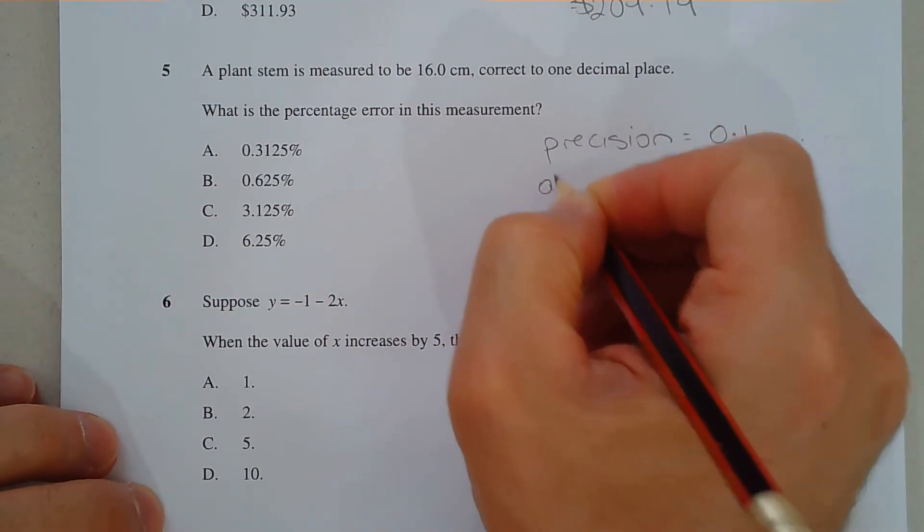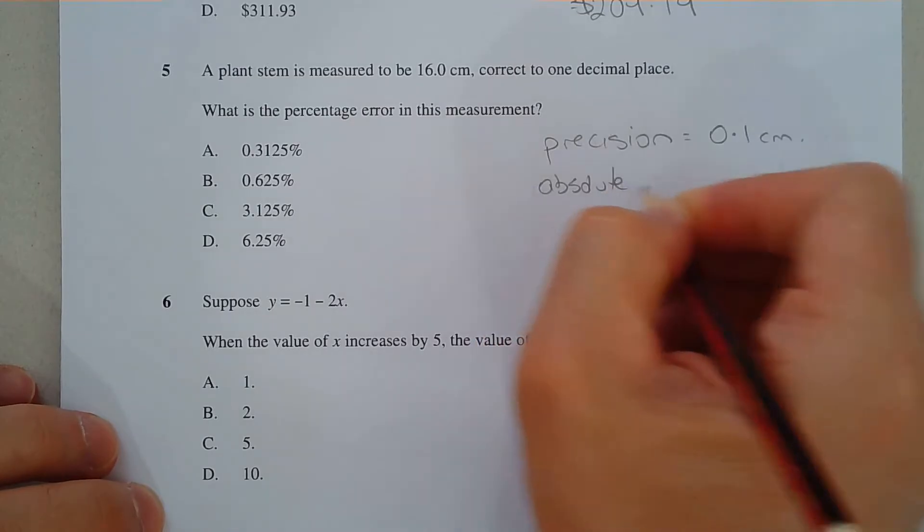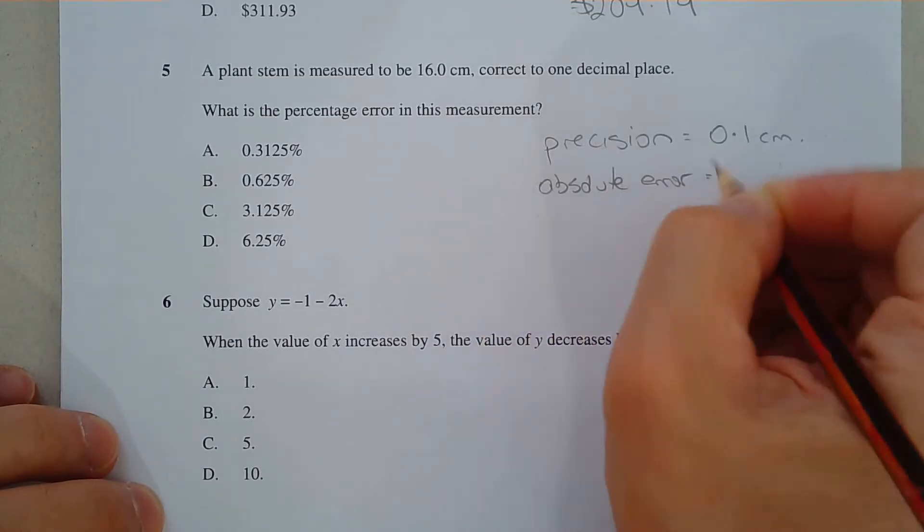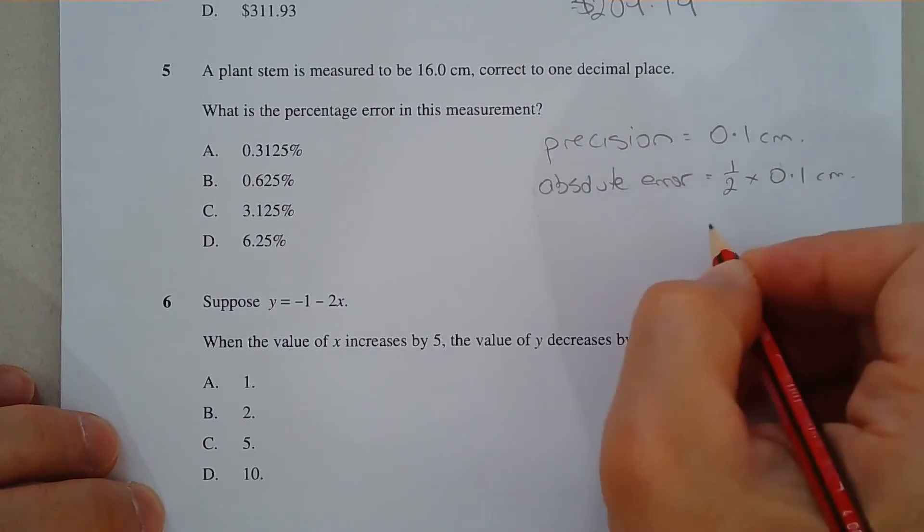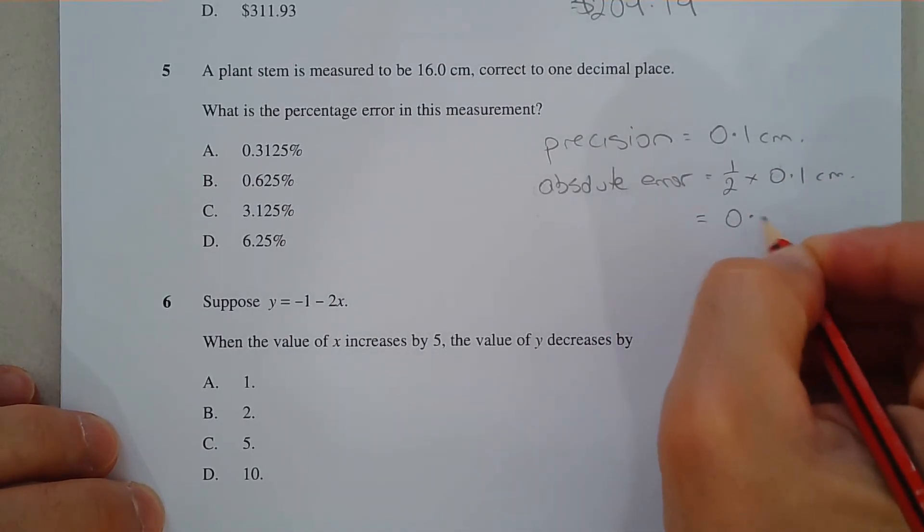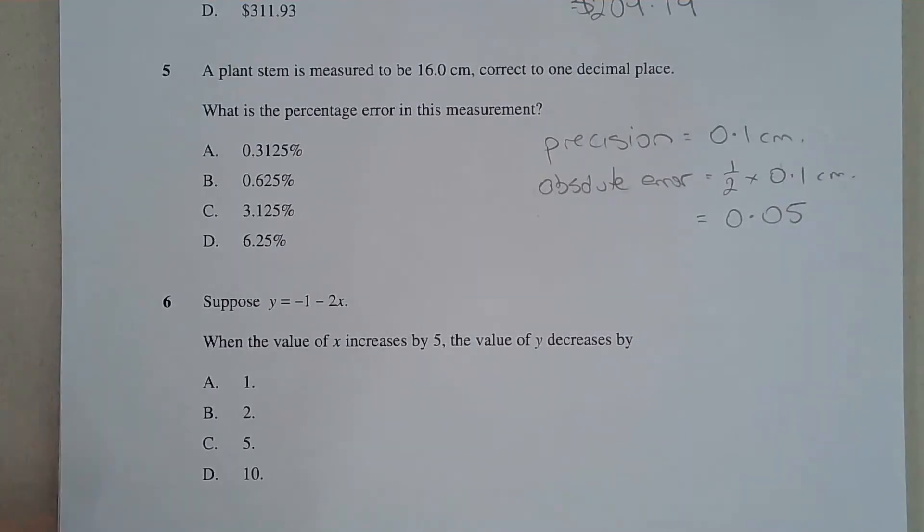Now the next thing that we need is the absolute error, which is half the precision. So that's going to be half times 0.1 cm, which is 0.05 cm.